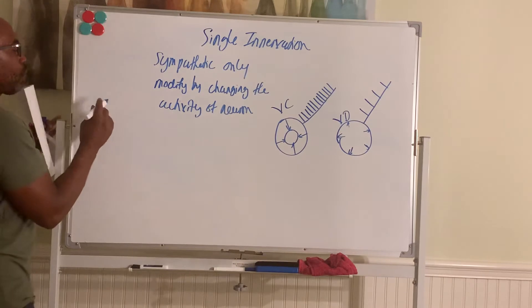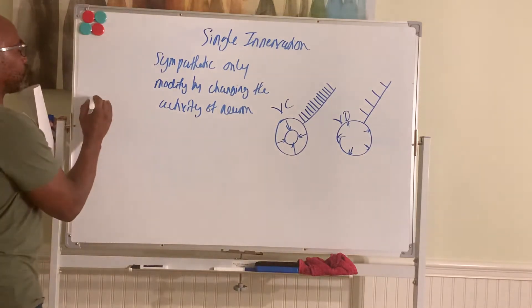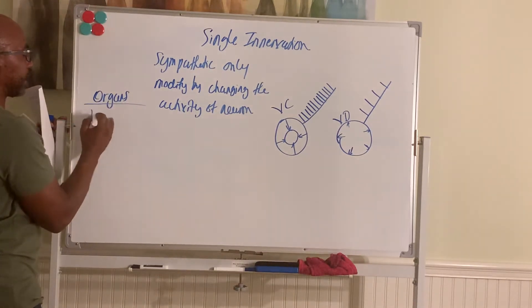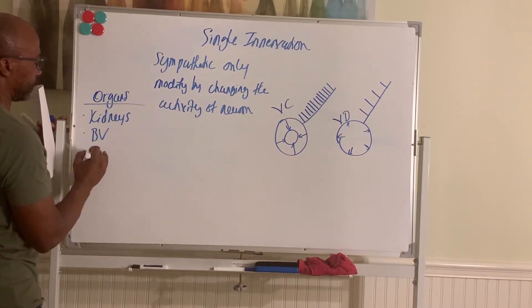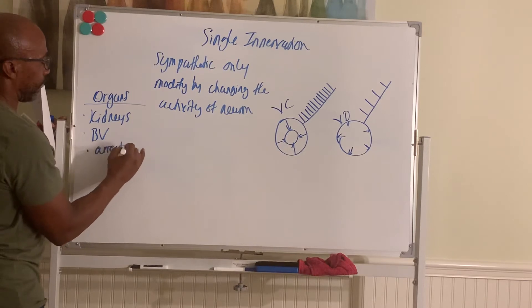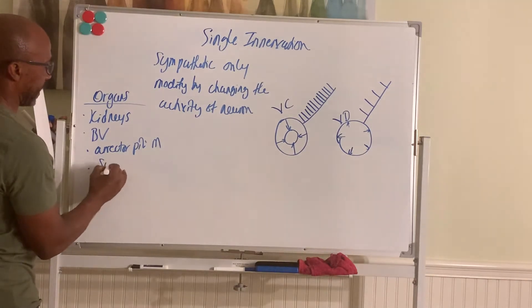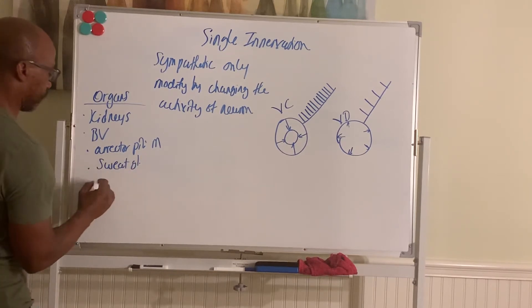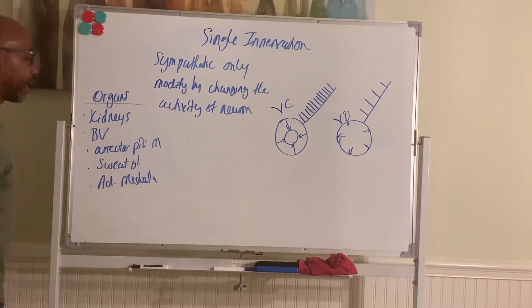So for single innervation, I want you to know which organs only get one. The organs that receive only one input are your kidneys, most blood vessels, your erector pili muscle, your sweat glands, and yes, of course, your adrenal medulla. Only receive sympathetic input, single innervation.